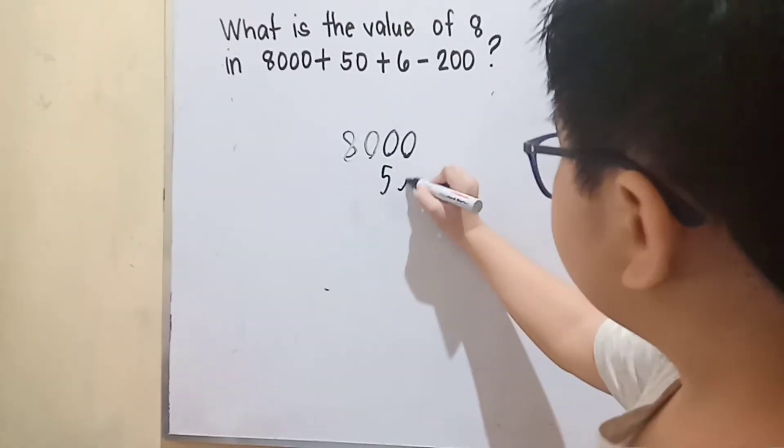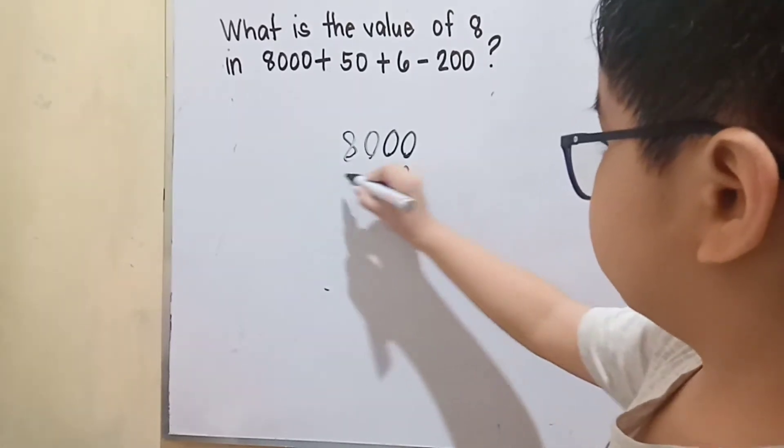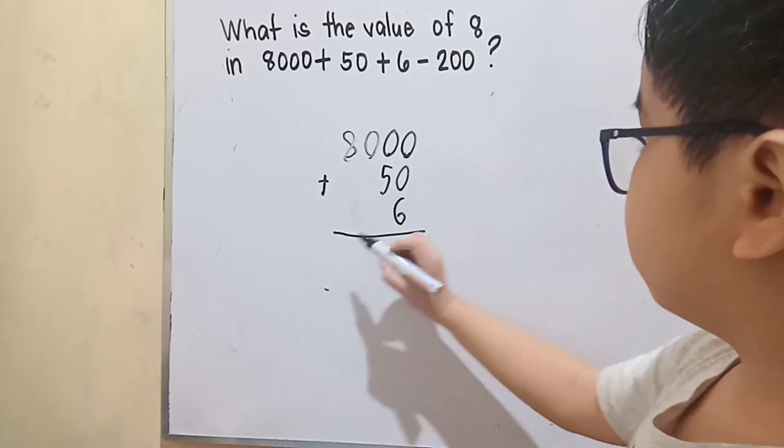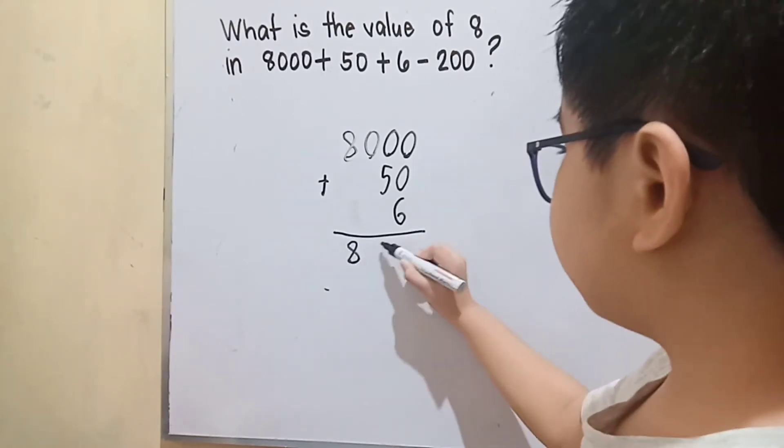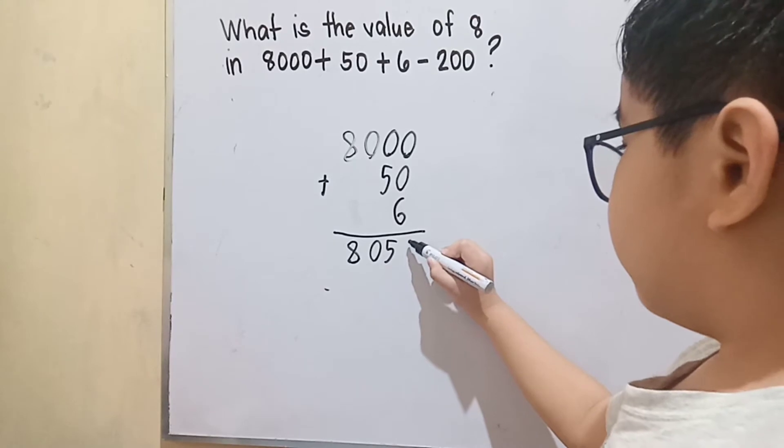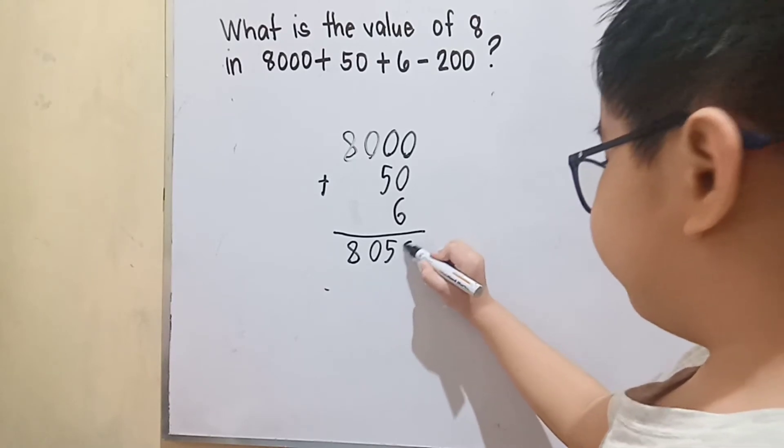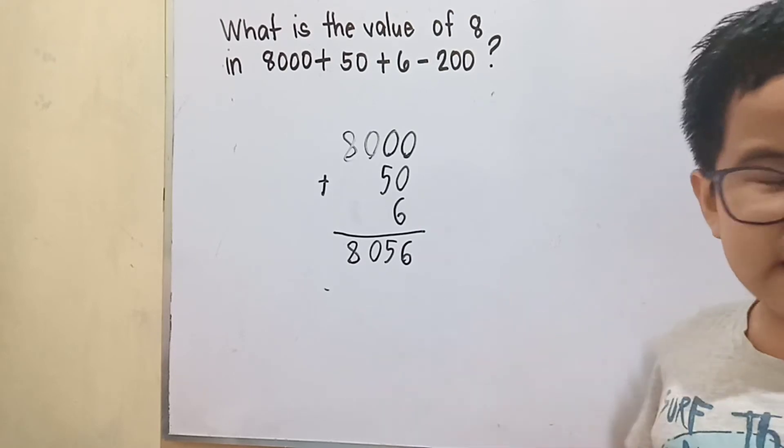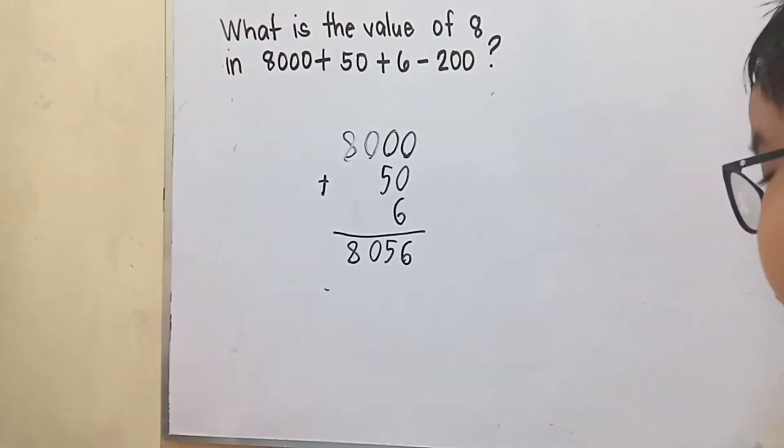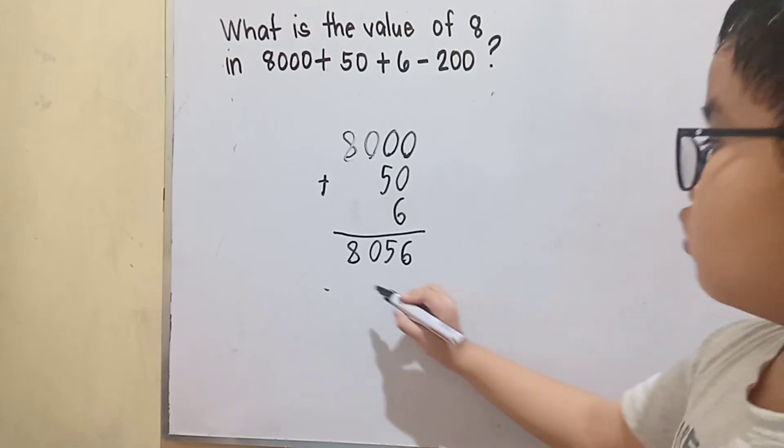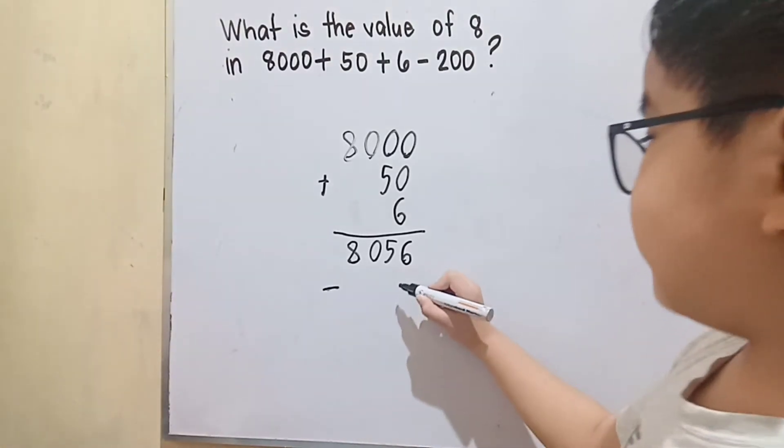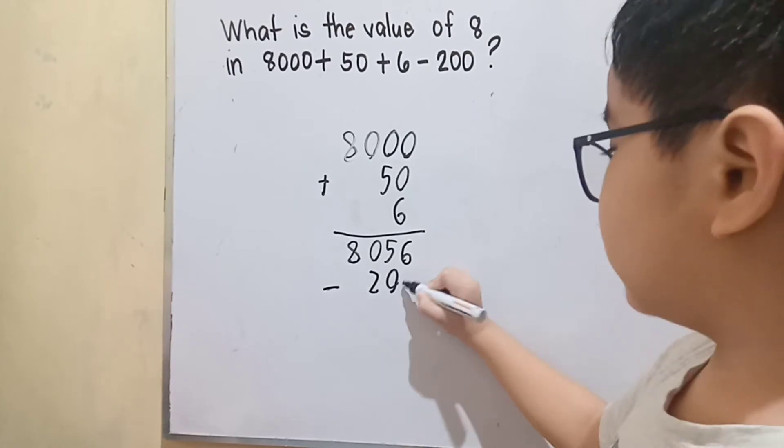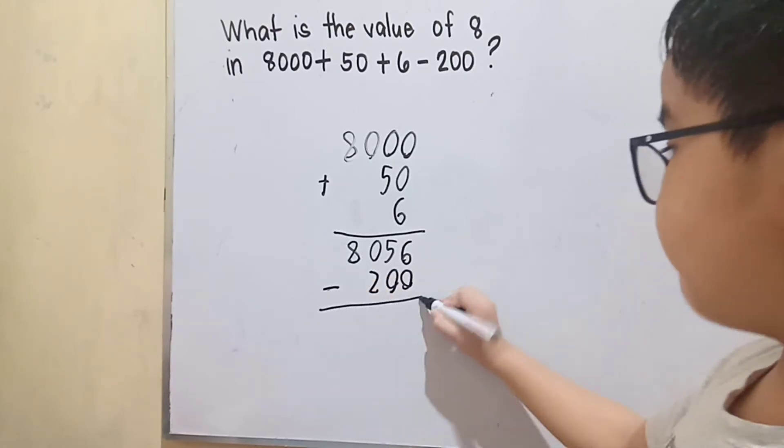So we have 8,000, 50, and 6, which gives us 8,056. Then 8,056 minus 200.